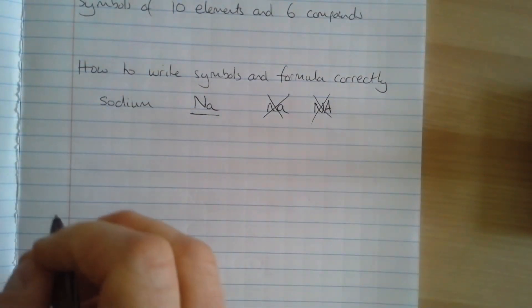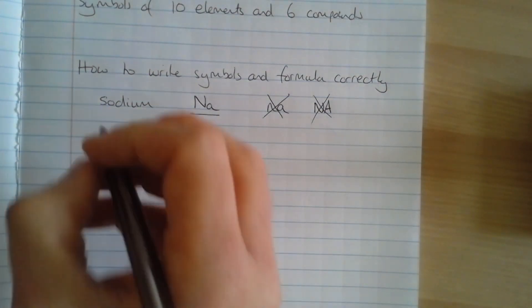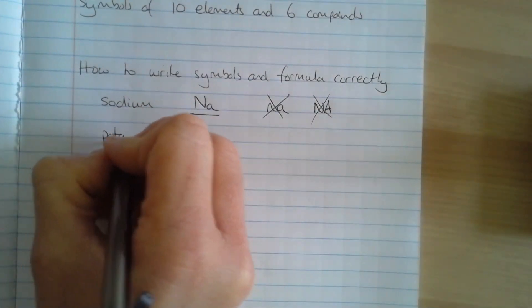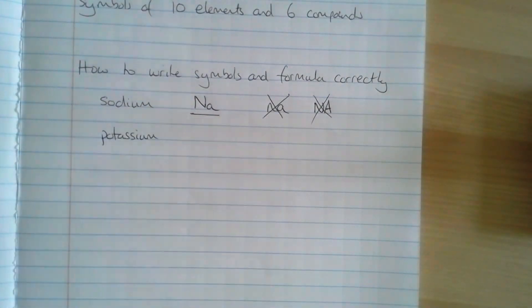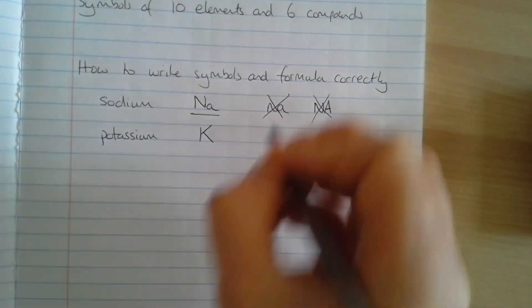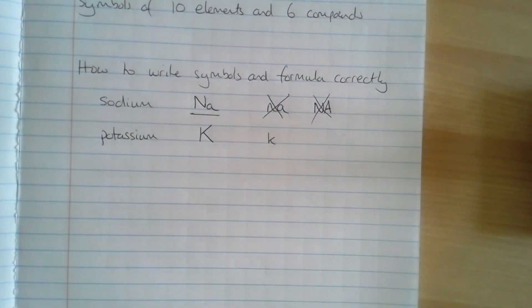If an element has a single symbol, so one of the ones on the list is potassium, then it's just a capital K. A little K here wouldn't be correct.